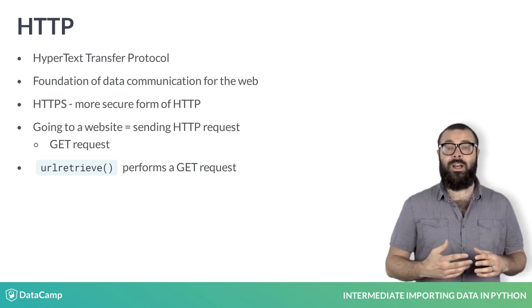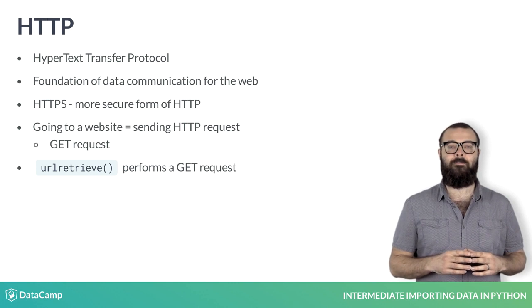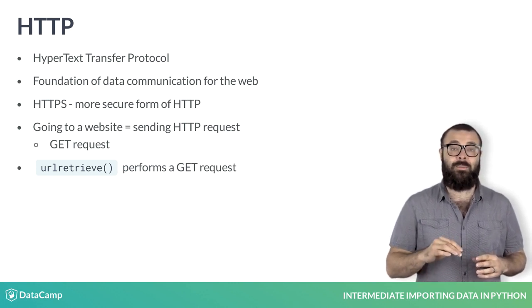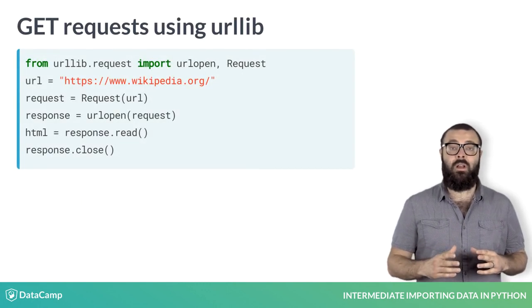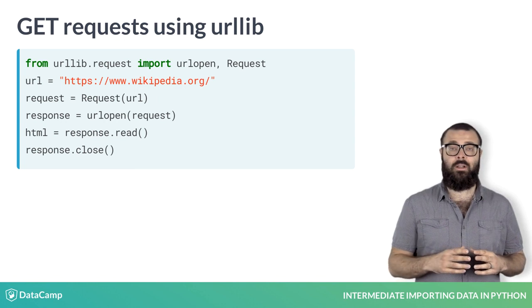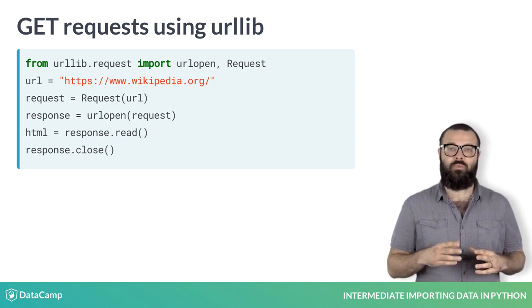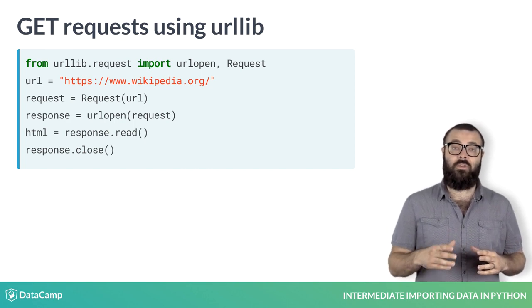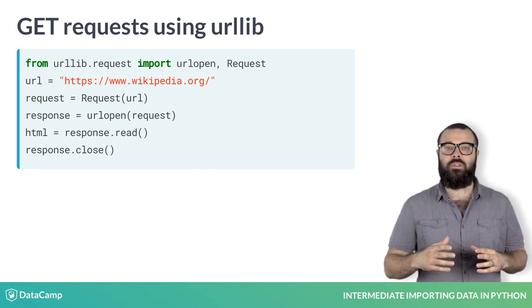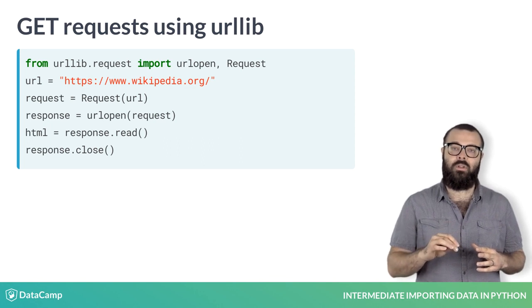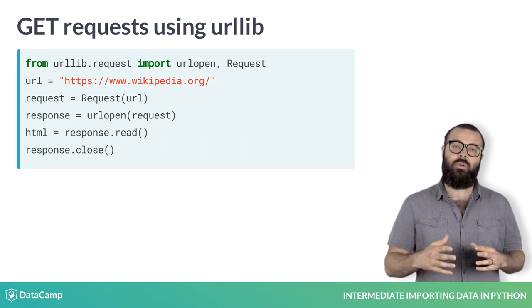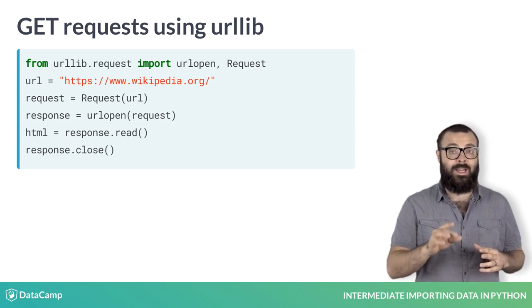The ingenuity of URL retrieve also lies in the fact that it not only makes a GET request, but also saves the relevant data locally. You'll learn how to make more GET requests to store web data in your environment. In particular, you'll figure out how to get the HTML data from a web page. HTML stands for Hypertext Markup Language and is the standard markup language for the web. To extract the HTML from the Wikipedia homepage, for example, you import the necessary functions, specify the URL, package the GET request using the function request, send the request and catch the response using the function URL open. This returns an HTTP response object, which has an associated read method. You then apply this read method to the response, which returns the HTML as a string, which you store in the variable HTML. Finally, you remember to be polite and close the response.